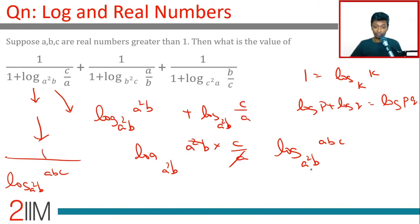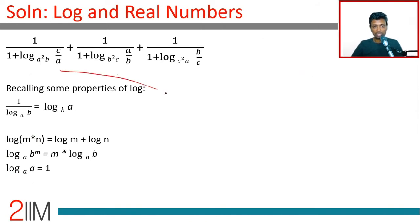1/log(abc) to the base a²b is nothing but log a²b to the base abc. That's it, we are through! So we can write this as log a²b to the base abc. This will be plus log b²c to the base abc...